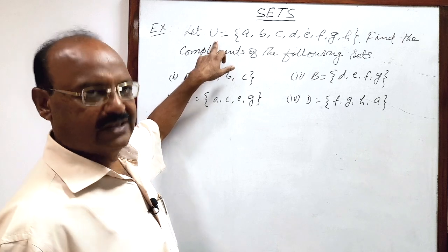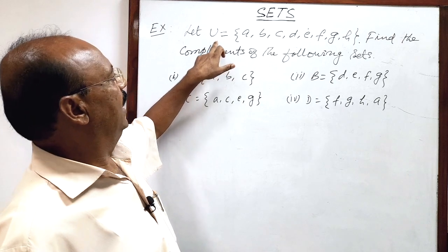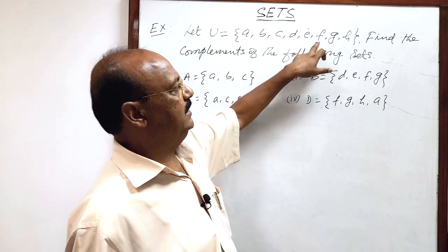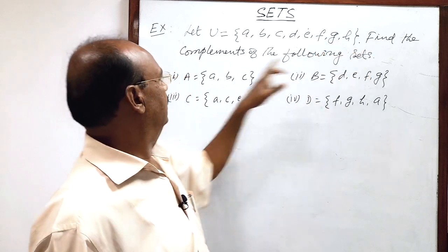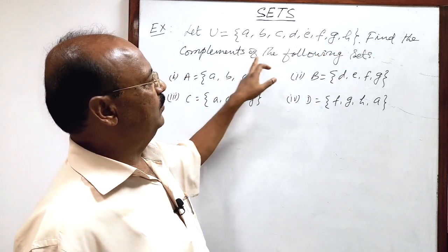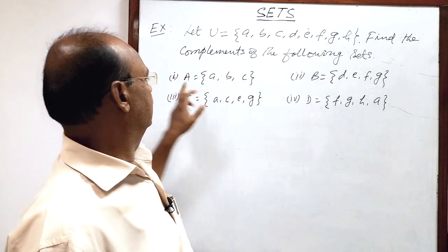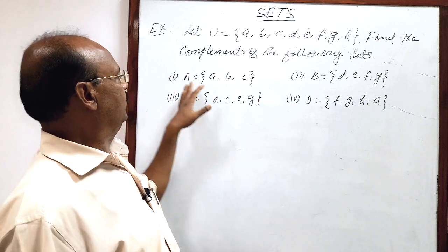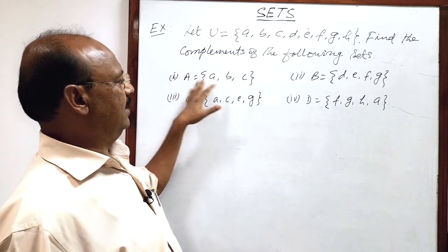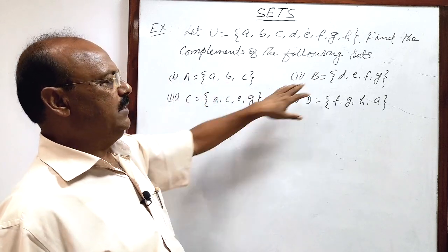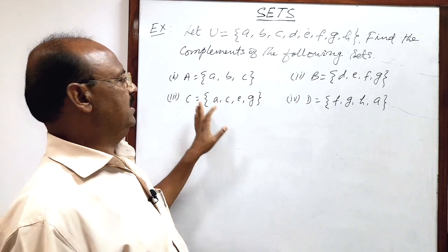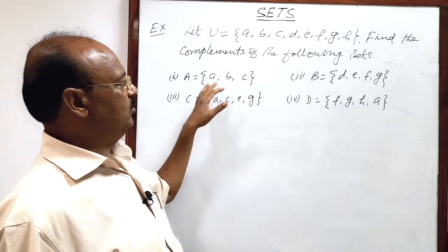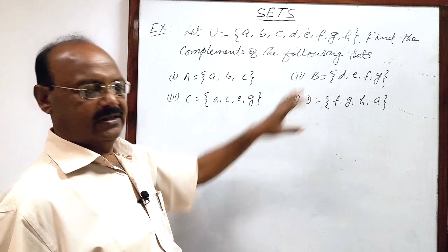Here the question is: let U be the universal set having elements a, b, c, d, e, f, g, h. Then find the complements of the following sets. Four parts of the question are given. Set A has elements a, b, c. Similarly, sets B, C, and D are given and we have to find the complements of these sets.